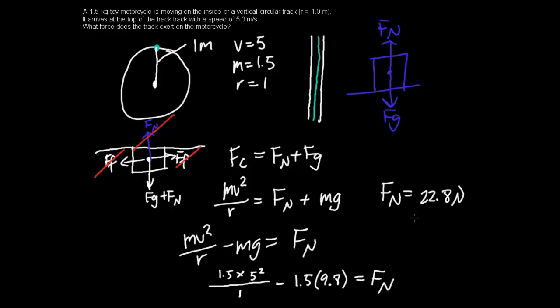And that's how we solve for the force, the normal force. So basically, our force is our normal force. It's 22.8 newtons. The track exerts a force of 22.8 onto this motorcycle. That's it. Hope I didn't confuse you guys too much.